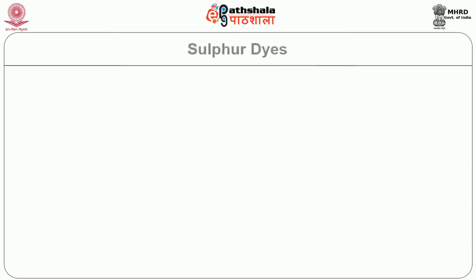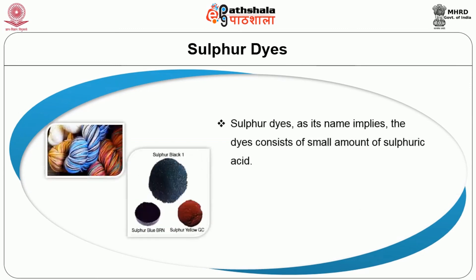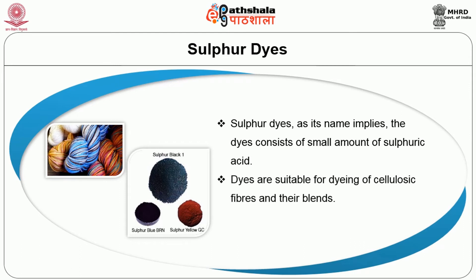Now we move on to the next class of dyes — sulphur dyes. As the name implies, these dyes consist of a small amount of sulfuric acid and a small quantity of acid is also added during dyeing. Sulphur dyes are relatively inexpensive and widely used for dyeing cellulosic fibres and their blends. They are widely used for black, blue, maroon, olive and green colours in medium to heavy depth. These dyes are available in powder, pre-reduced powder, grain, paste and liquid forms.